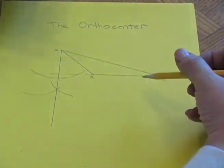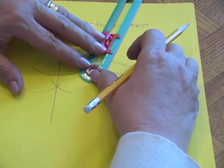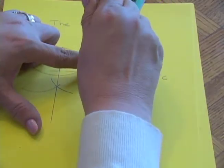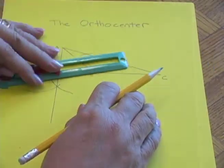Now I'll construct the altitude from B to AC. Notice that each time I'm creating a little perpendicular bisector situation for the point in question.